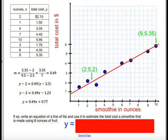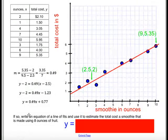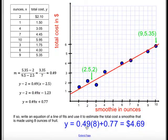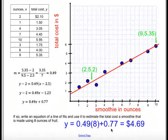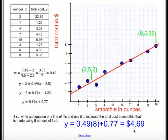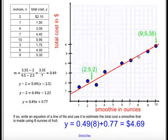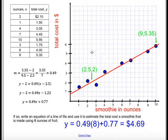Now there was one other question. It said, if so, write an equation in the line, which we did, and use it to estimate the total cost of a smoothie that is made using 8 ounces of fruit. Well, x is my ounces, so all we have to do is take our equation and plug in 8 where we see ounces. So I took 49 cents times 8 plus an additional 77 cents, yielding me a cost of a smoothie of approximately $4.69. Now, if you look at our graph at 8, if we go up, basically it says it should be a little more than $4.50, which it was. It was $4.70.